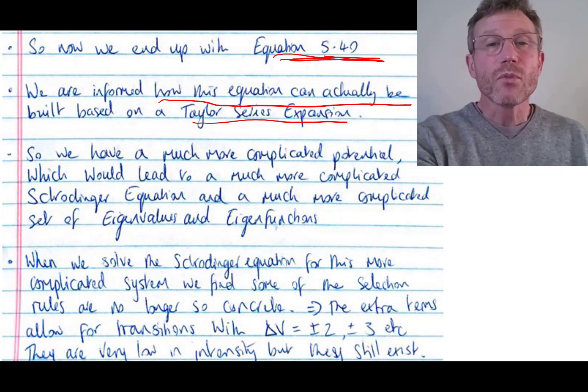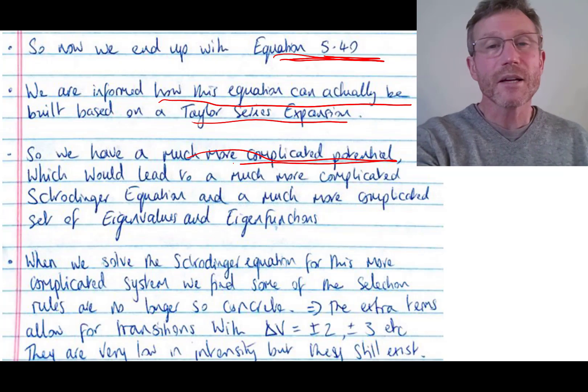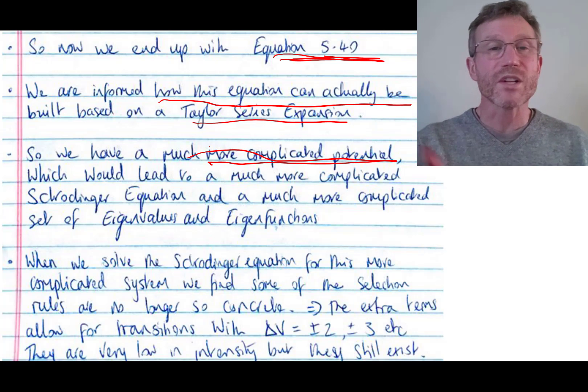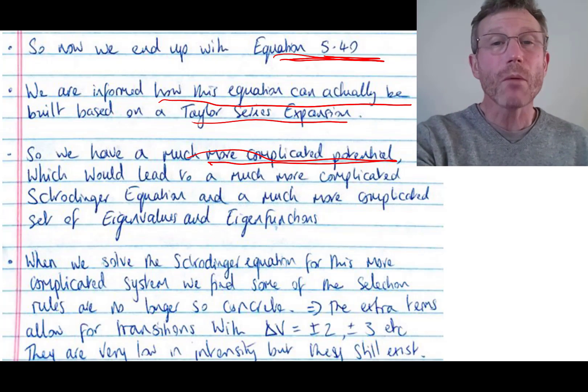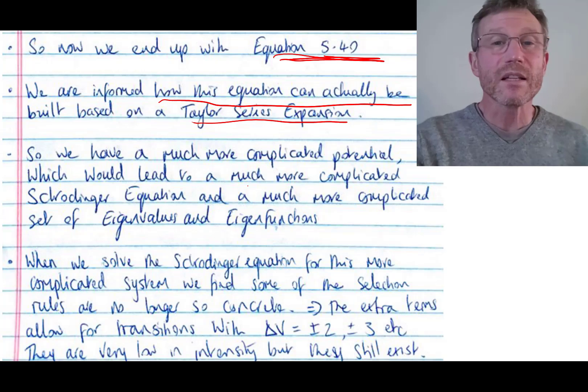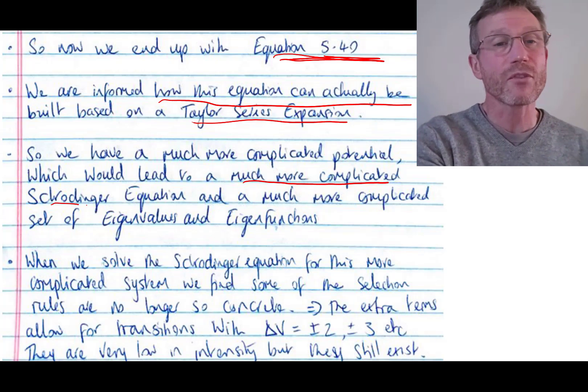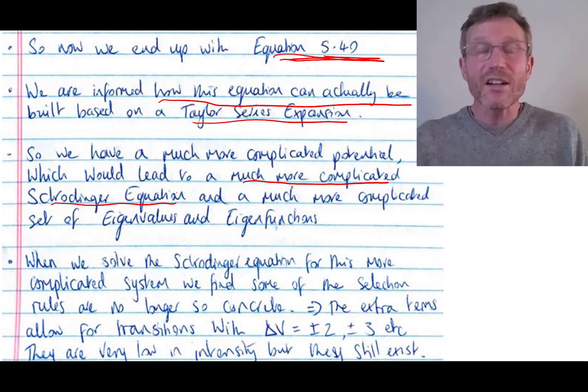So we've got this more complicated potential in here, which would lead to a more complicated, when we think about it, it'll lead to a much more complicated Schrodinger equation. So we've got to put that new potential energy term along with the kinetic energy into the Schrodinger equation.